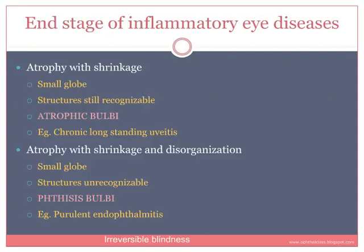The end stage of all inflammatory diseases can be atrophy of the structures of the eye, resulting in a small globe. Histopathologically, it could be atrophic bulbi or phthisis bulbi. A small atrophic globe with shrinkage but where structures are still recognizable as separate is called atrophic bulbi — this occurs in chronic long-standing uveitis. When atrophy occurs with shrinkage and disorganization so that structures cannot be clearly differentiated, it is called phthisis bulbi, for example after suppurative inflammation causing purulent endophthalmitis. In both atrophic and phthisis bulbi, the patient has irreversible blindness.